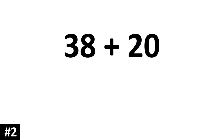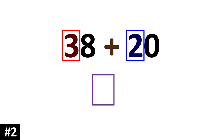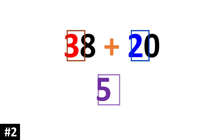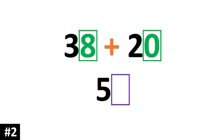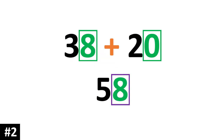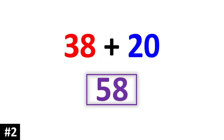38 plus 20. First we just focus on the tens column: 3 tens plus 2 tens gives us 5 tens. Then we focus on the ones: 8 ones plus 0 ones gives us 8. So the answer is 58.